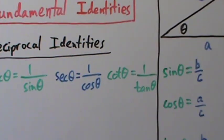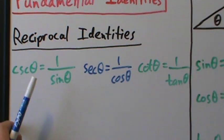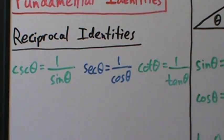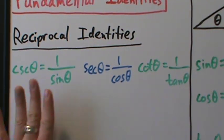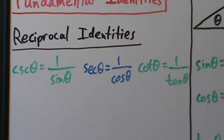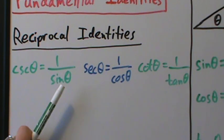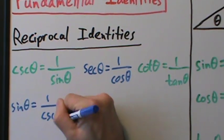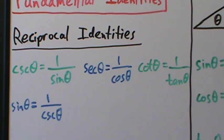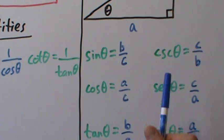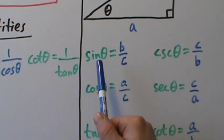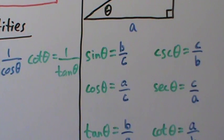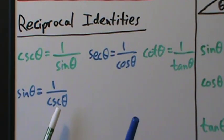To summarize: cosecant of theta is 1 over the sine of theta, secant of theta is 1 over the cosine of theta, and cotangent of theta is 1 over the tangent of theta. We could also express them the other way: if cosecant is 1 over sine, then sine of theta is 1 over the cosecant of theta. Because cosecant is the reciprocal of sine, the sine is equally the reciprocal of the cosecant — B over C is the reciprocal of C over B.